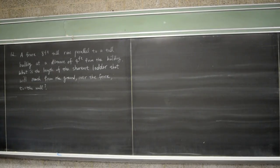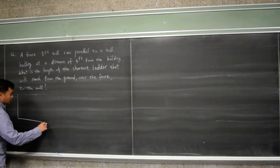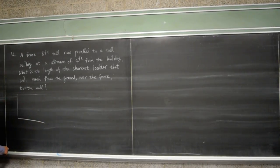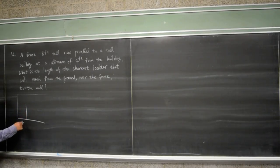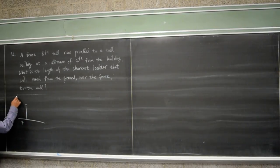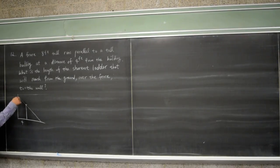To explain this situation, you have to draw two triangles. So let's say you have this building, and 4 feet from the building there is an 8-foot-tall fence, and you're trying to put the ladder there so that it just goes over the fence and reaches the wall.